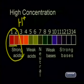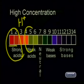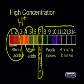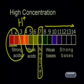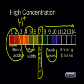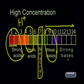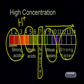Weak acids can have pH values of 4 or even 5. Neutral substances, like water, have a pH of 7. When the hydrogen ion concentration decreases, the substance is a base and the pH values will be above 7. Weak bases have pH values of 8 or 9, while strong concentrated alkalis have pH values of 13 or 14.